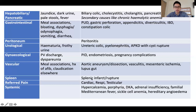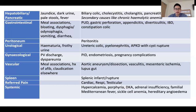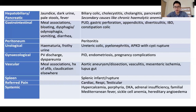For completeness, the spleen is an organ to consider, as is referred pain from other organs. Systemic causes are important, and conditions such as hypercalcemia, porphyria, DKA, adrenal insufficiency, familial Mediterranean fever, sickle cell — mainly in the UK context — and porphyria and related conditions are important to read around.